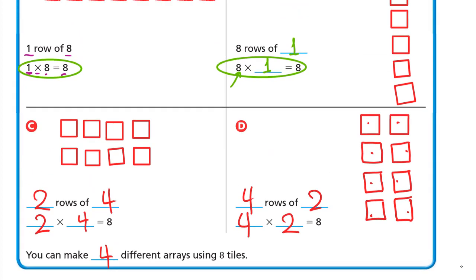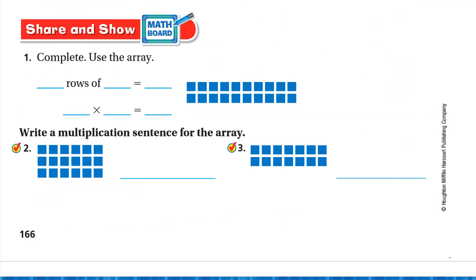So we made four different arrays using eight tiles. One times eight or eight times one both equal eight, and two times four or four times two both equal eight. Now complete using the array shown: two rows, each row has ten tiles — one, two, three, four, five, six, seven, eight, nine, ten. Two rows of ten: ten plus ten is twenty. Two times ten equals twenty.